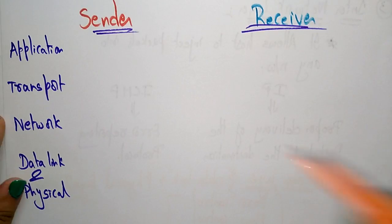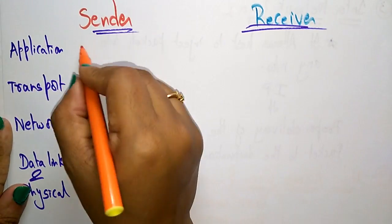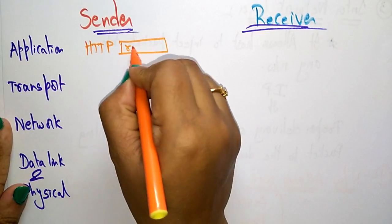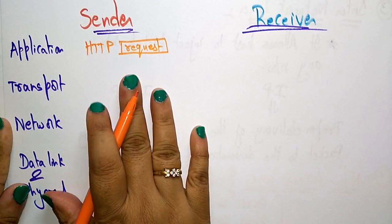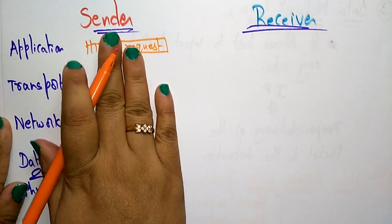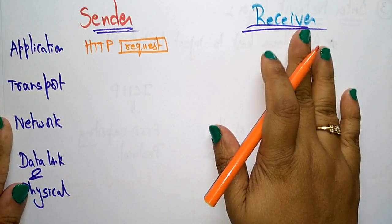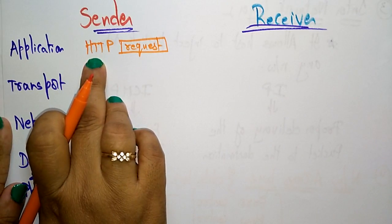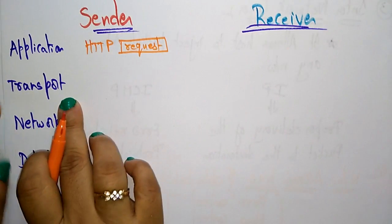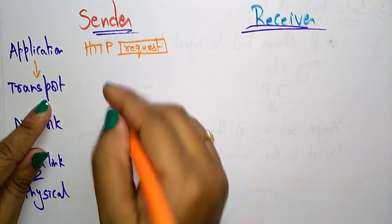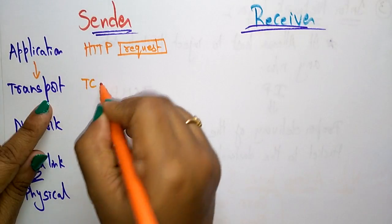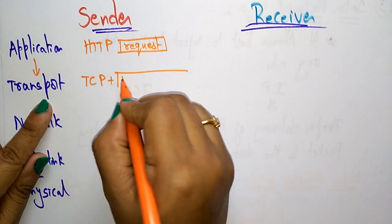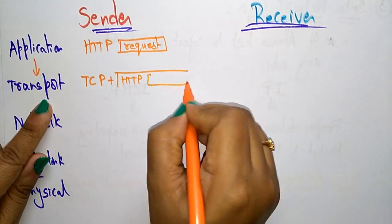Let's look at what these layers do from sender to receiver. On the sender side, the application layer uses the HTTP protocol. The user — the client side — is sending a request message. When it comes to the transport layer, HTTP is combined with the TCP protocol.